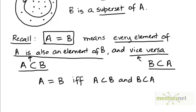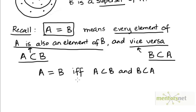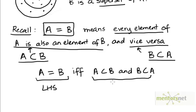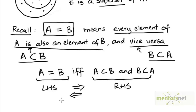Now, this phrase "if and only if" means that the left-hand side (LHS) and the right-hand side (RHS) both imply one another. That is, if the left-hand side is true it implies that the right-hand side is true, and if the right-hand side is true it in turn implies that the left-hand side is true.